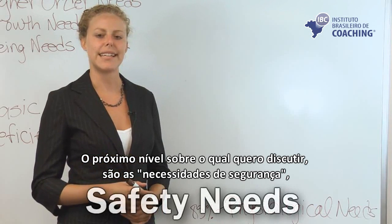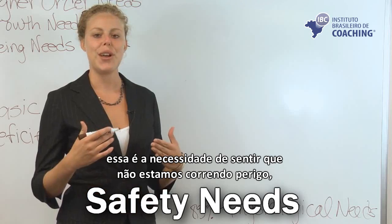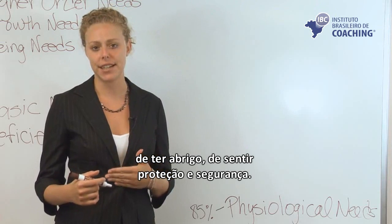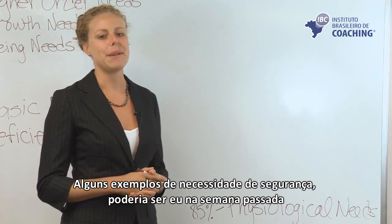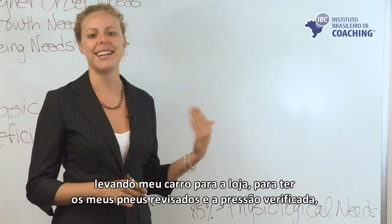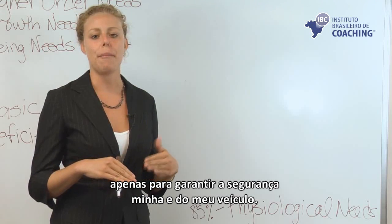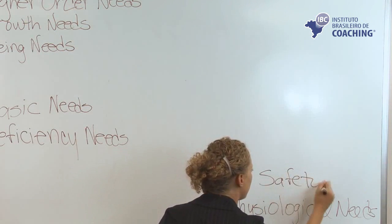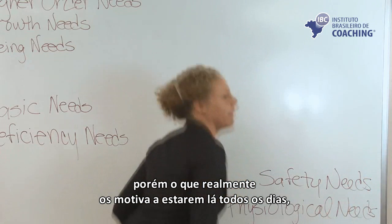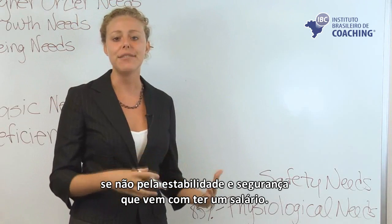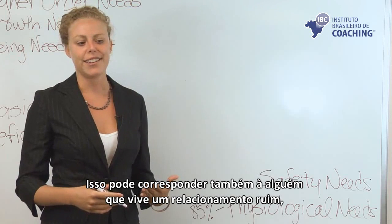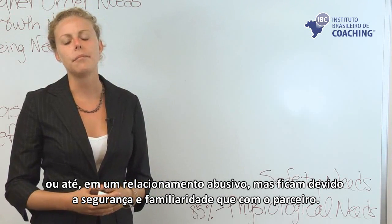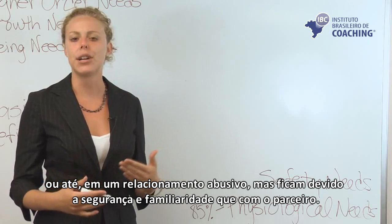The next level is the safety needs — the need to feel that we're not in physical danger, to have shelter, and to have some sense of security and safety. Some examples: last week I took my car to the shop to get my tires rotated and tire pressure checked just to ensure the safety of my vehicle. Another example might be somebody staying in a job that they really dislike — what would motivate someone to stay in a job they couldn't stand except the safety and security that comes from having that paycheck? This could also correspond to somebody staying in a bad or even abusive relationship because of some sense of security from the familiarity of staying with that person.